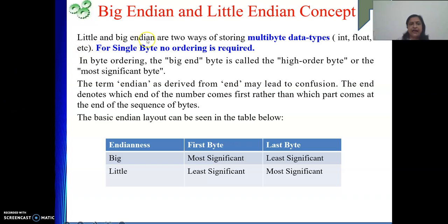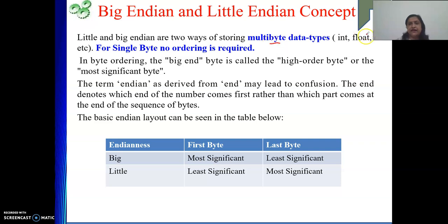Little endian and big endian are two ways of storing multi-byte data. This concept is applicable whenever your data consists of multiple bytes — like integers, floating point numbers, doubles, and so on. For single-byte data, no ordering is required.